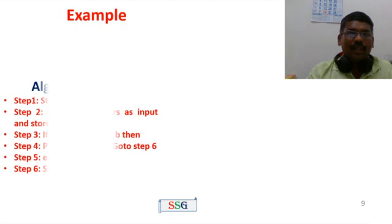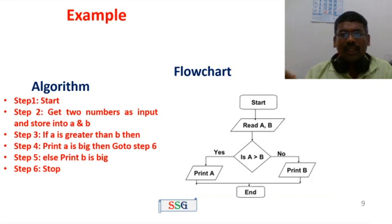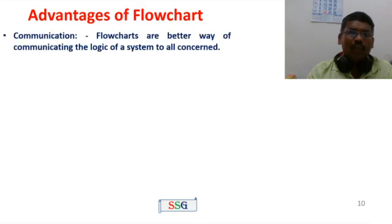Next example: greatest of two numbers. Start, get two numbers as input and store into a and b. Check condition: if a is greater than b — condition true: print a is big. Condition false: print b is big. Then go to stop. Flowchart: Start, read a and b, check condition is a greater than b, true: print a, false: print b.